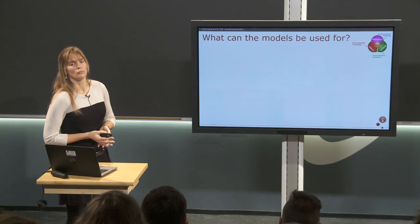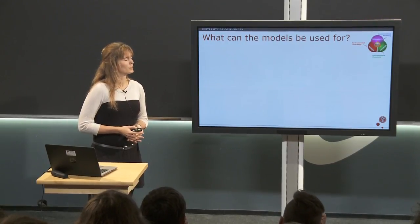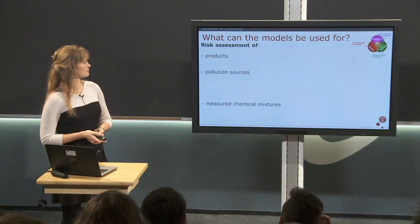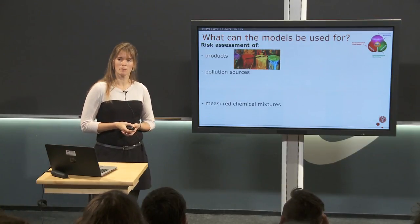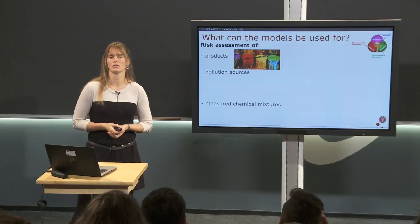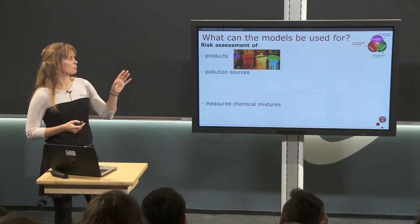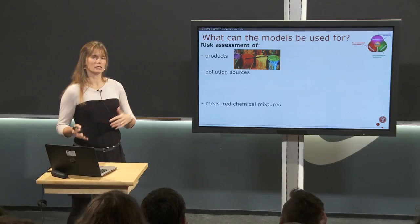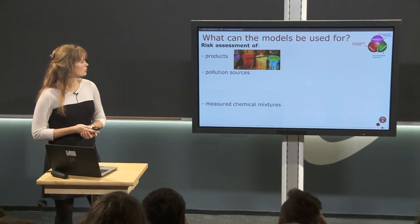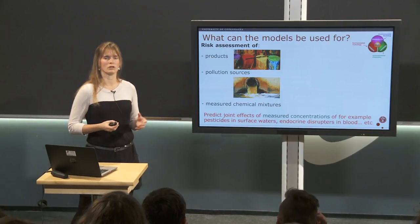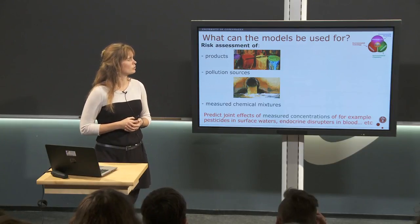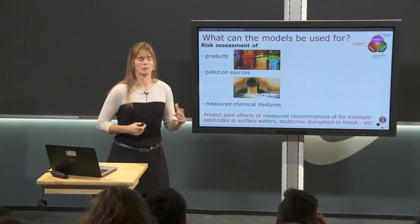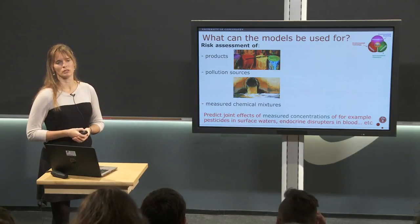So what do we use the models for? One use is risk assessment of different cases — for example, a product. Under the new EU chemical registration legislation called REACH, all products have to come with a description of their potential toxicity, calculated using this model and knowledge of the toxicity of the different chemicals in the product. We can also do it for pollution sources and for all kinds of measured chemical combinations — if the exposure out there is measured, we can estimate the risk of that combination.